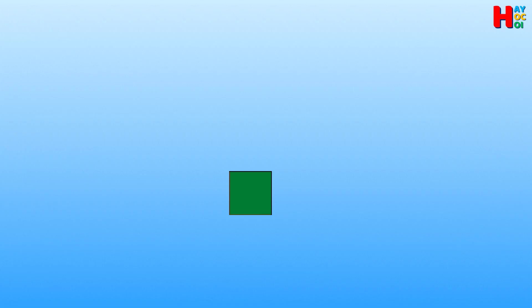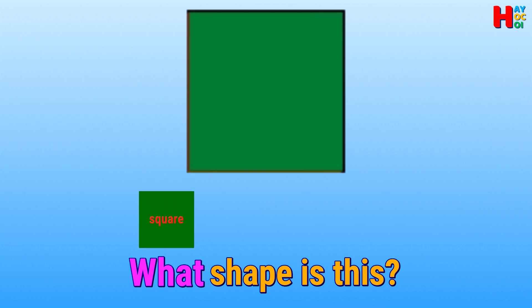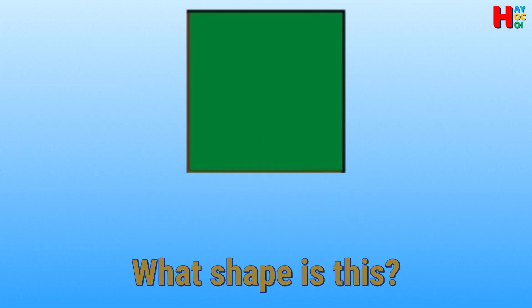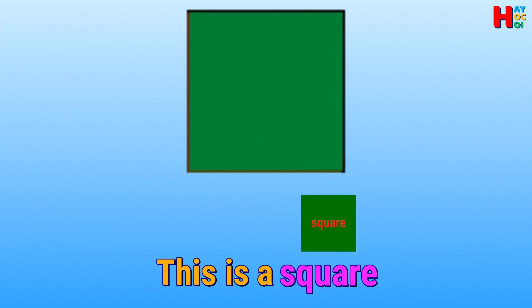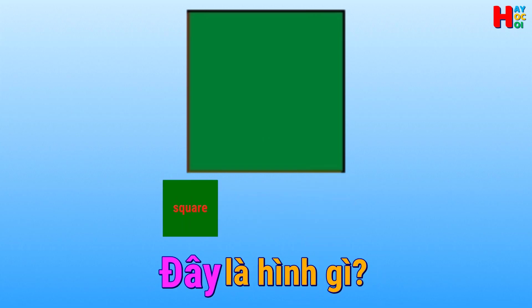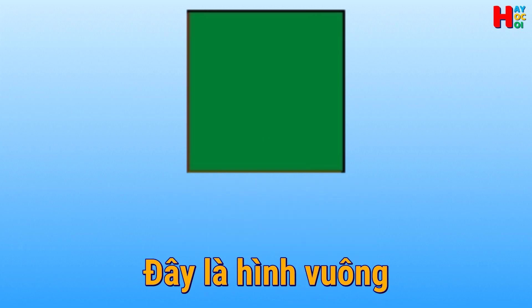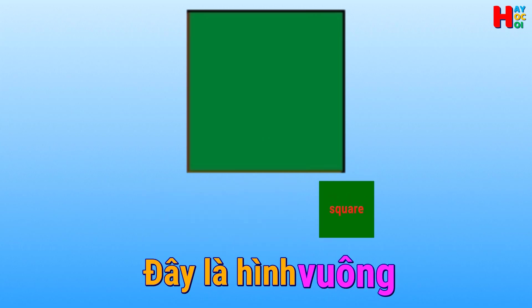This is a triangle. What shape is this? This is a square. Đây là hình gì? Đây là hình vuông.